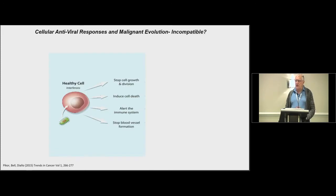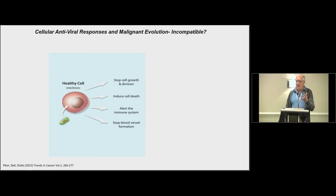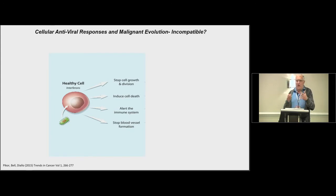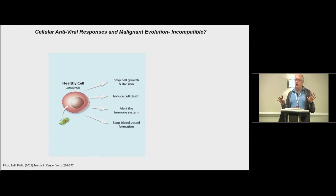If you think about a healthy cell when it gets infected, it's an altruistic cell. It doesn't want the body to get an infection, so it does everything it can to prevent virus spread. The virus may infect that cell, and it will turn on things like interferons and many other programs. Interferons get expressed, turning on antiviral programs — about 2,500 genes get elaborated. That healthy cell will stop its own growth, sometimes commit suicide, call in the immune system, and say don't grow any blood vessels toward me.